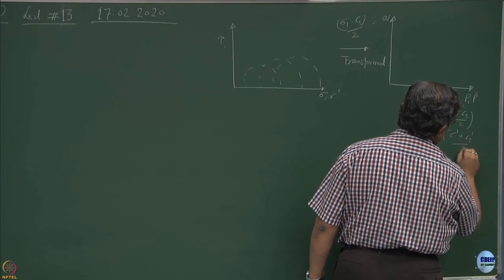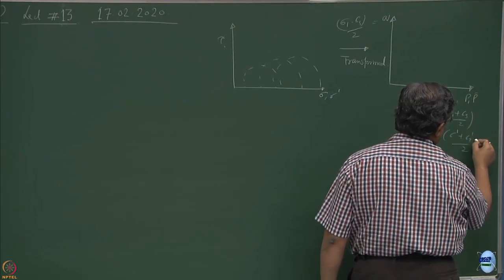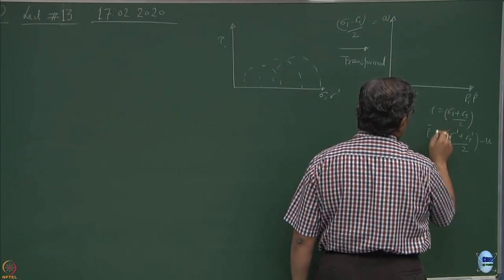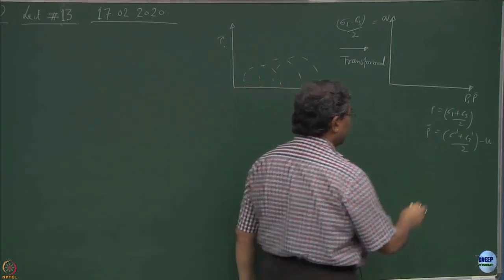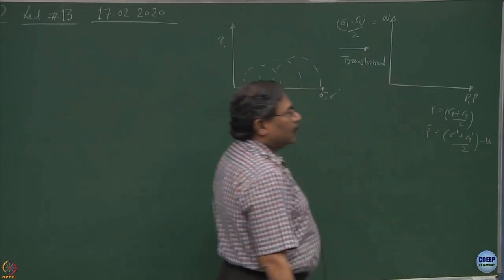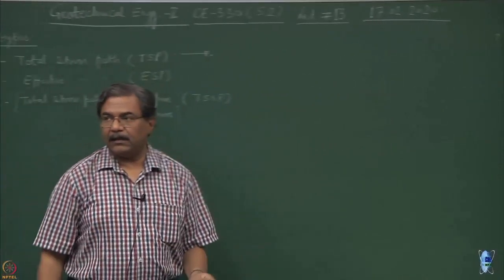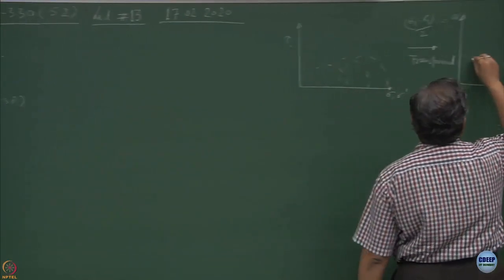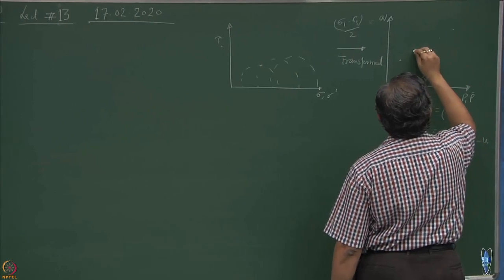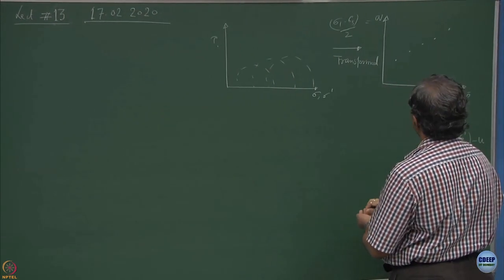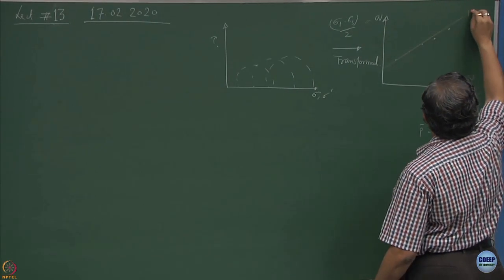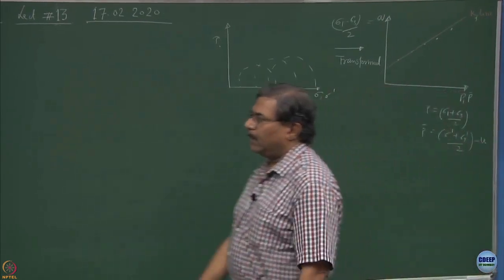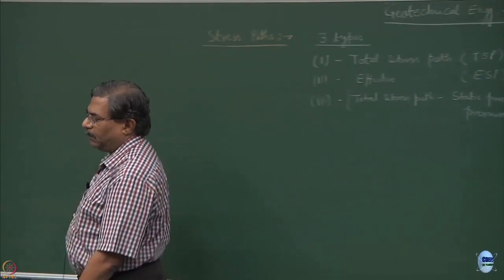P was defined as sigma 1 plus sigma 3 by 2, and sigma 1 prime plus sigma 3 prime by 2, with the pore water pressure. This will be minus U component. So P prime is equal to P minus U. When you transform the tau-sigma plane to PQ plane, we get points and each point corresponds to a Mohr circle. Then we plotted this line and termed it as a K line, sometimes also known as Kf line, the failure line which is equivalent to the Mohr-Coulomb envelope.